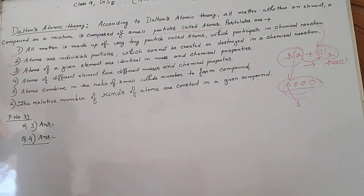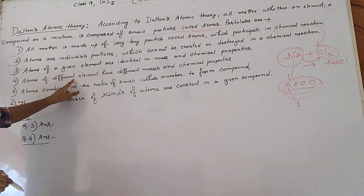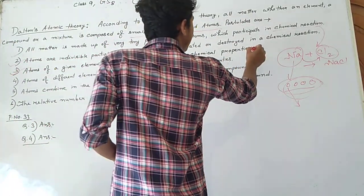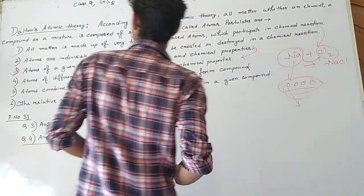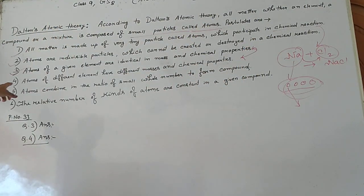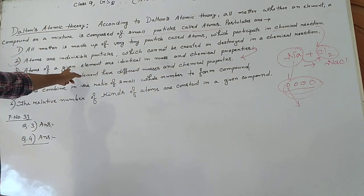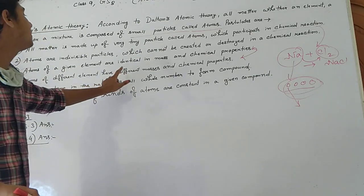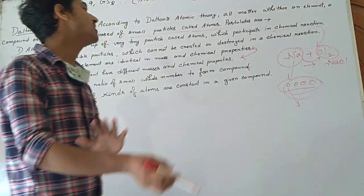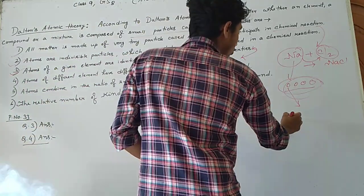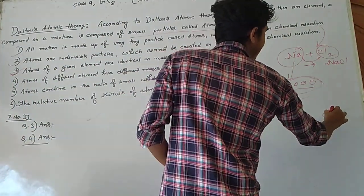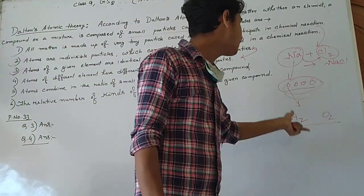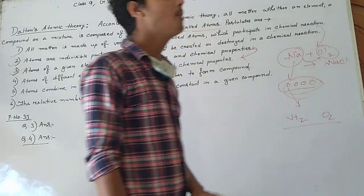Postulate number 4 states: atoms of different elements have different masses and chemical properties. This is the inverse of postulate 3. For example, hydrogen and oxygen — atoms of these two different elements have different masses and different chemical properties.